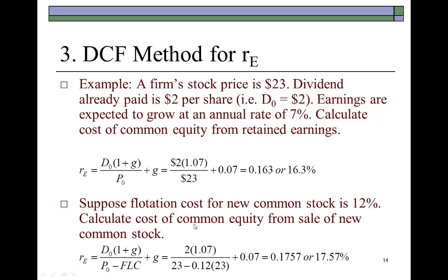Nevertheless, we must bear in mind that when common equity is generated in the form of retained earnings, there is an opportunity cost associated with that. So even though the firm hasn't gone outside to sell anything or to pay anybody any commissions to obtain the funds, the required rate of return on internally generated common equity is the opportunity cost involved in the investment of that money. So in this example, 16.3% represents how much the firm would earn if it were to invest that money elsewhere in a comparable project in terms of risk.